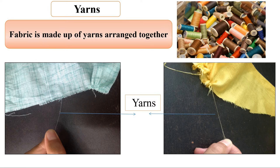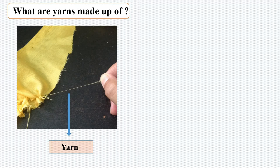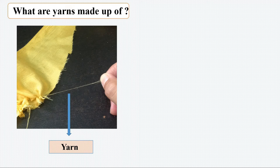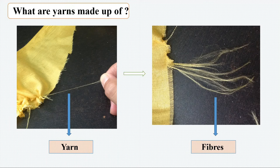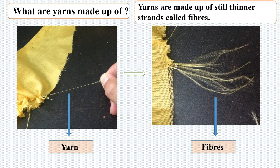Now let's look at yarns more closely. Scratch one end of the yarn you took out from the fabric with your nail and observe it carefully. You will notice that yarn splits into many thinner strands. These small and thin strands are called fibers. Thus we can say that yarns are made up of still thinner strands called fibers.